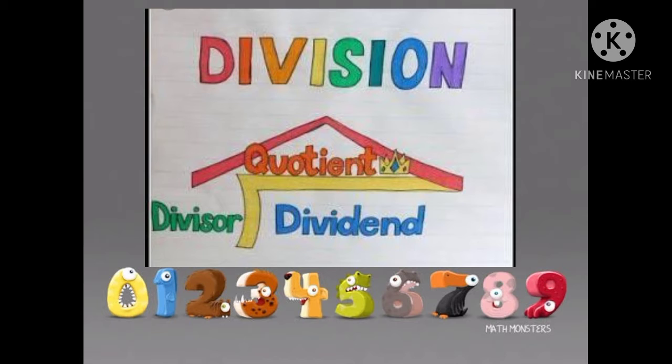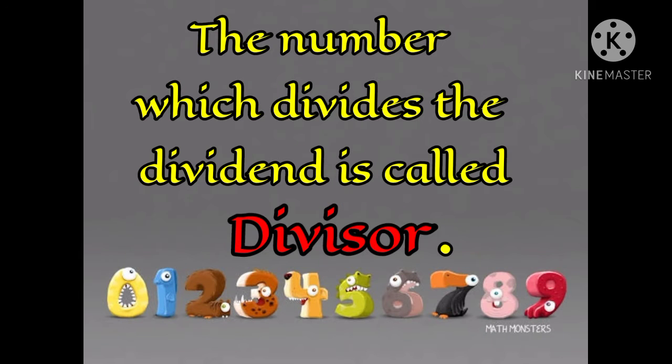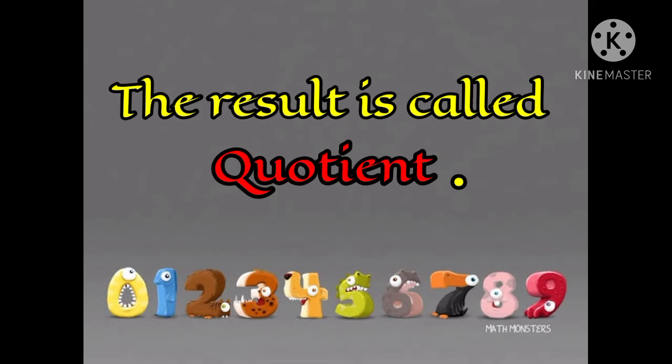First of all, we will study divisor, quotient, and dividend. Let's see what these three things are. The number to be divided is called dividend. The number which divides the dividend is called divisor. The result is called quotient.